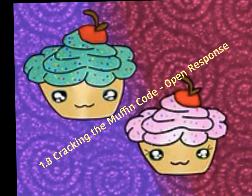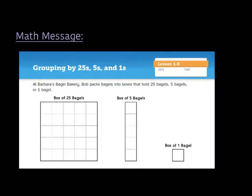Today I'm going to give you an introduction to lesson 1.8, Cracking the Muffin Code, which is an open response lesson, and I will explain what that means in just a moment. So your math message today in class is actually the beginning of the open response. You are going to complete SMJ page 19 in class and discuss your results with a partner.